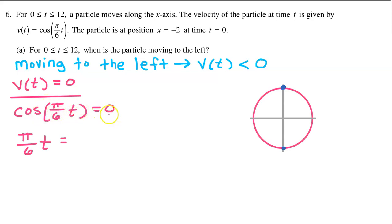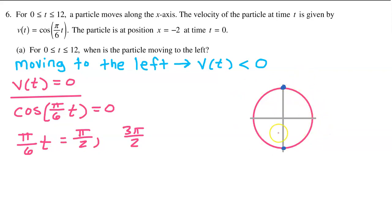We ask ourselves, where does cosine equal 0? On the unit circle, cosine is an x value, which will equal 0 at pi over 2 and 3pi over 2 as we travel counterclockwise. We usually stop here because we are used to solving for values between 0 and 2pi. However, we are looking for values of t between 0 and 12, so we keep going around the unit circle to find an additional solution at 5pi over 2.